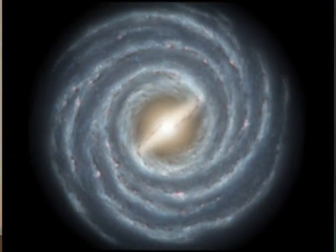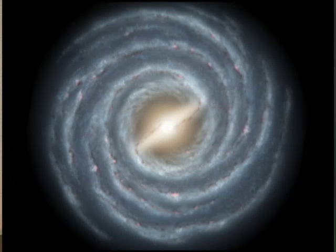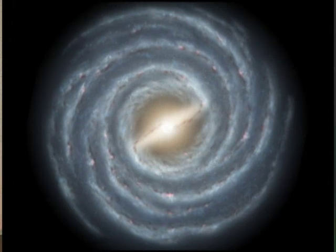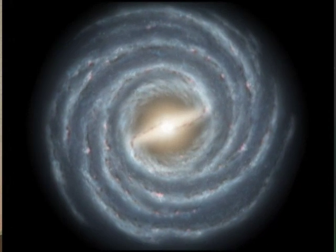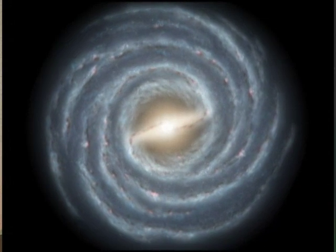In many galaxies, the wave is in a spiral shape, and this spiral moves through the stars and clouds, disturbing them.